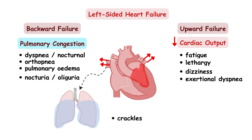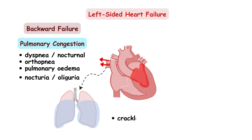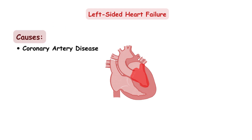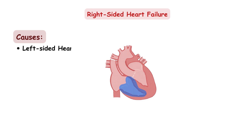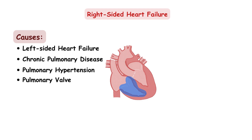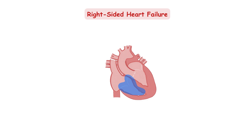The causes of left-sided heart failure include coronary artery disease, myocardial infarction, hypertension, valvular heart disease, cardiomyopathy, and many more. The causes of right-sided heart failure include left-sided heart failure — in which case we have biventricular heart failure — chronic pulmonary disease, pulmonary hypertension, pulmonary valve stenosis, coronary artery disease, and others. With right-sided heart failure, blood backs up into the veins of the systemic circulation, leading to peripheral congestion.